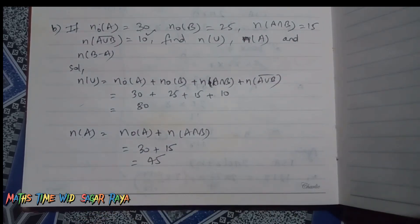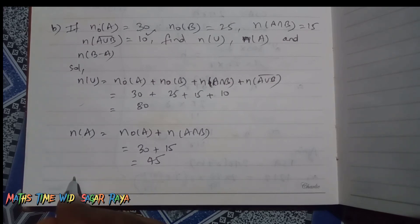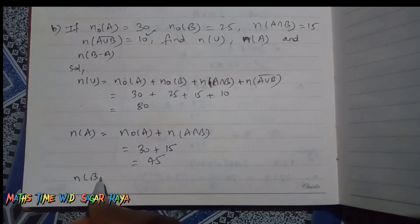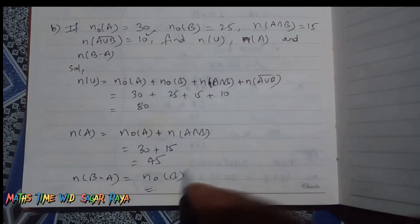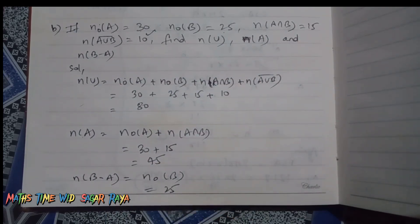15 equals 45. Similarly, n(B-A), so n(B-A) is equal to n(only B). So n(only B) is already given here as 25, so our answer is 25. Thank you.